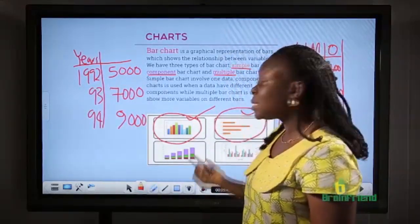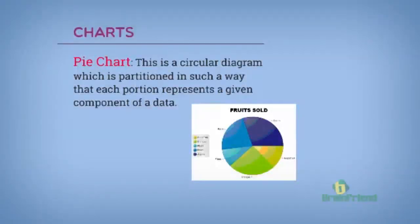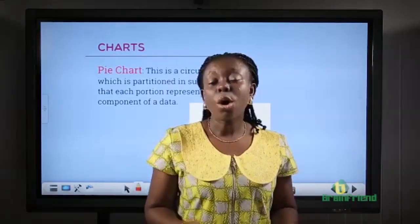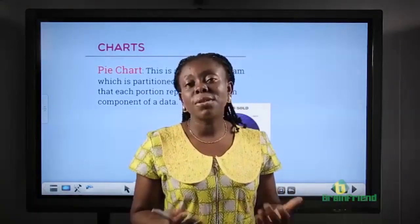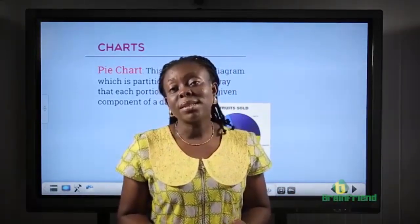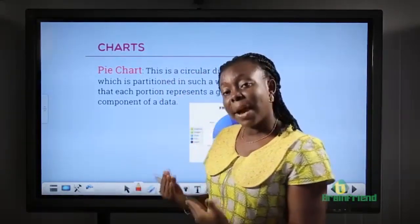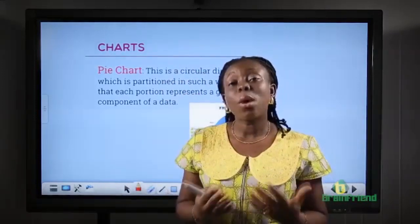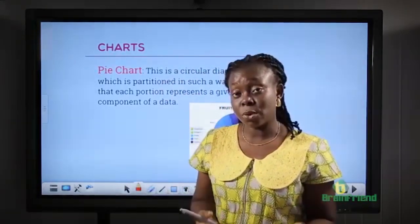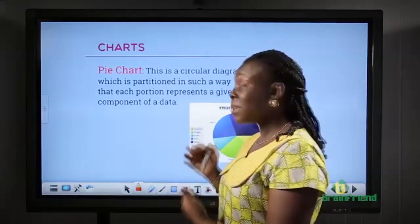Another chart we'll be looking at is the pie chart. It is a circular statistical diagram that is partitioned or sectored into different parts, and each part representing a component of a data. This is a pie chart representing the quantity or amount of fruits sold.